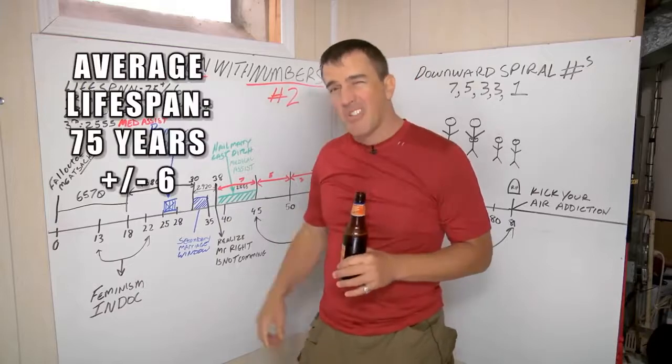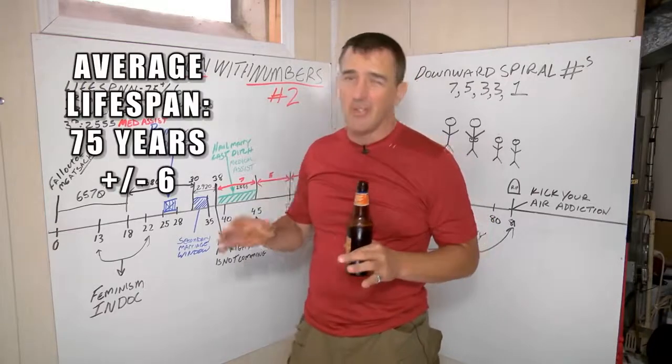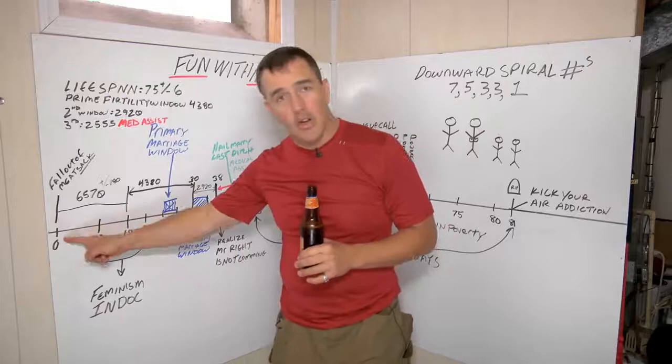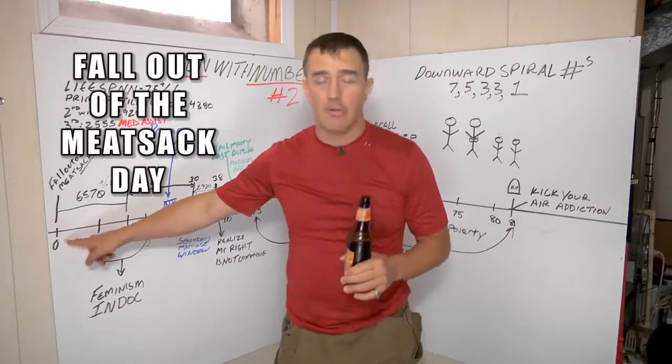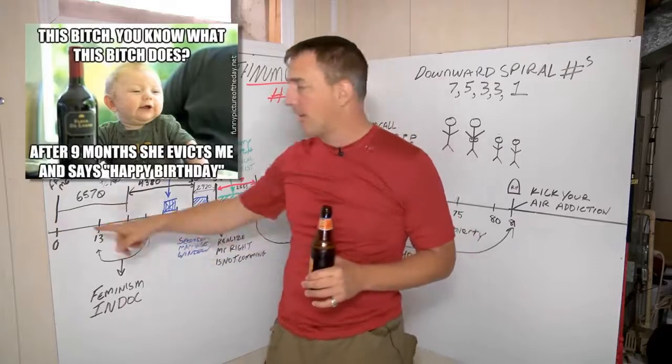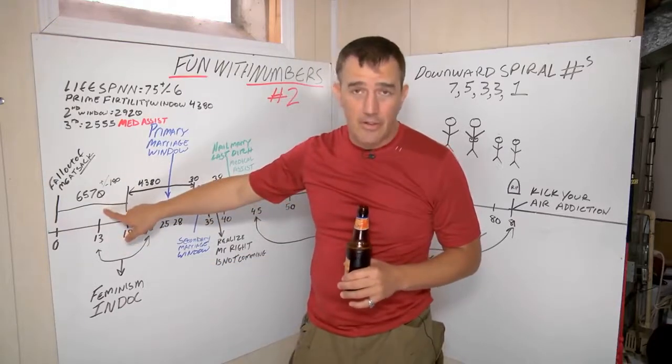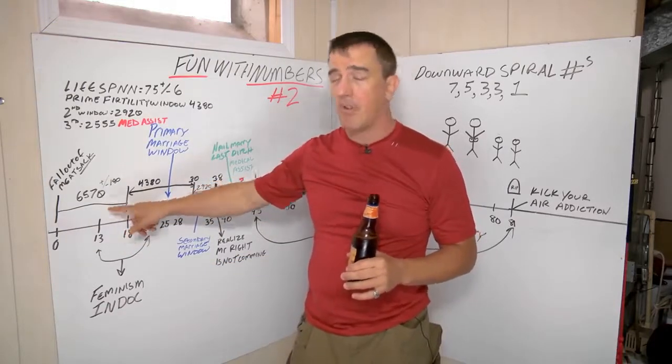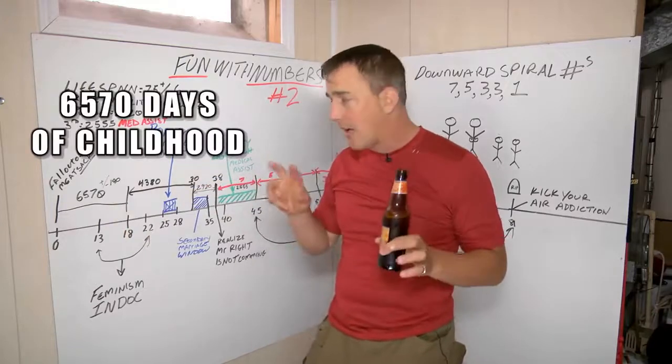This is what I've come up with thus far. The average lifespan, pretty much 75 plus or minus 6. We start off fall out of the meat sack day, or birthday. You show up, it is what it is. There's 6,570 days, plus or minus 180, of childhood.